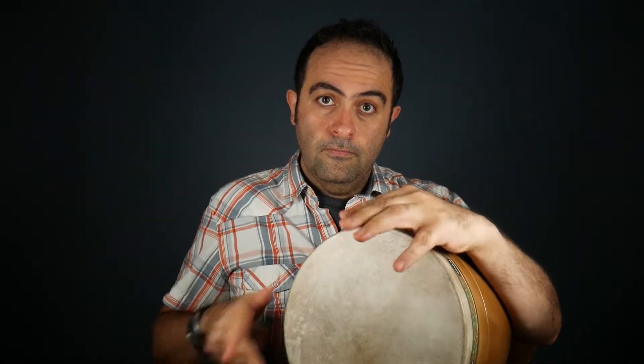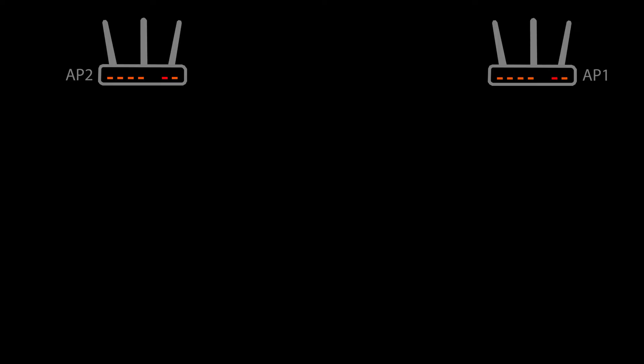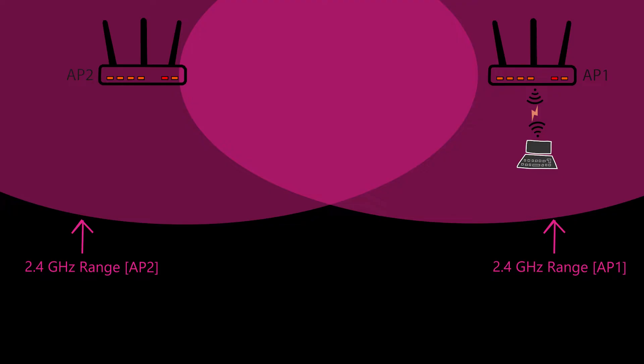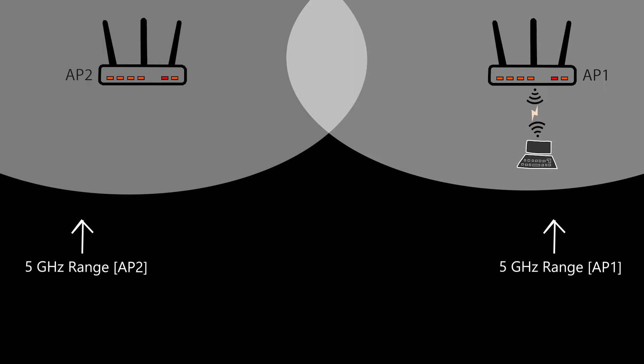Number two: in the previous example we assumed the access points were single-band, but nowadays they're dual-band or even tri-band. For example, a Wi-Fi 6E access point can have a 2.4 GHz, 5 GHz, and a 6 GHz band. If the access points are dual-band with a 2.4 GHz and a 5 GHz band, the higher frequency has a shorter range — so if this is the range of the 2.4 GHz band, the range of the 5 GHz band would be something like this.